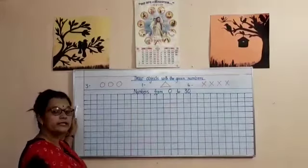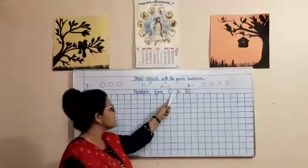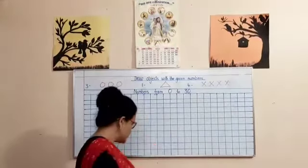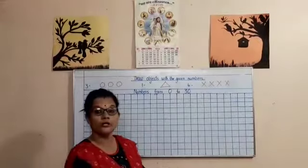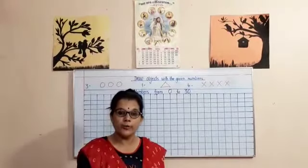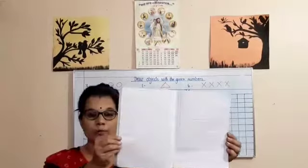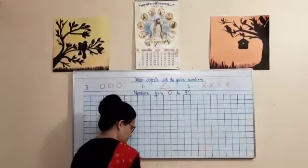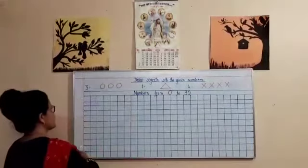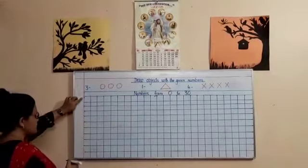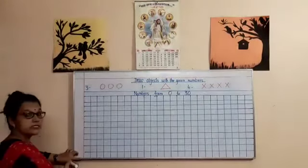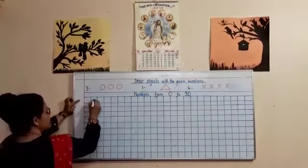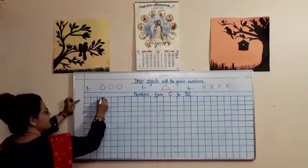So, come now let us learn numbers from 0 to 30. I'm going to teach you how to write it in a max copy. Do you all know what's a max copy? A square line copy is called a max copy like this. So, come let's start writing.